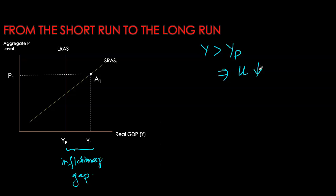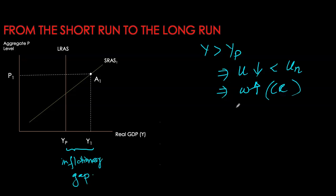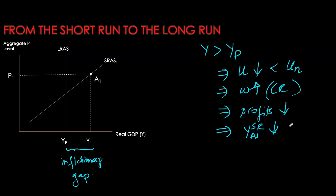In this inflationary gap, I'm currently at point A1. Whenever we have an inflationary gap, we have shortages in our labor market because we are overheating our labor resource. The corresponding level of unemployment is going to be quite low and significantly below our natural rate. Labor market shortages in the long run are going to cause wages to eventually rise. As wages start to rise, they're going to cause profits of firms to go down, and with declining profitability, firms are willing to produce less at any given price level. So our short-run aggregate supply curve starts to decrease.